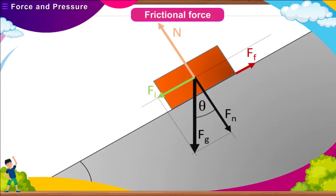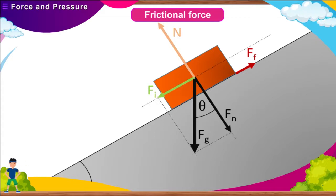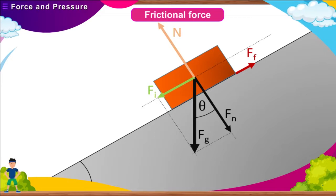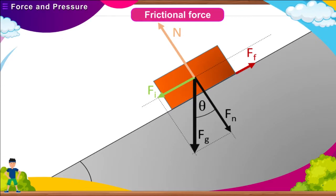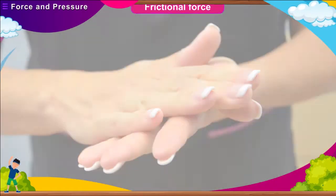Frictional force acts on moving objects. When an object slides or rolls on a surface, a force called frictional force comes into play between the surfaces in contact. It tries to stop the object from moving. Friction is also generated by rubbing hands together.